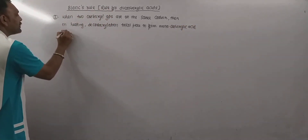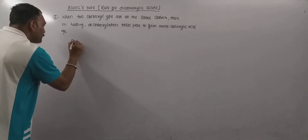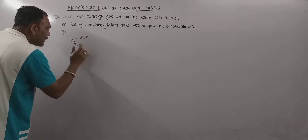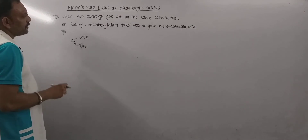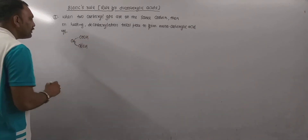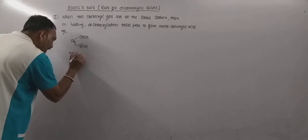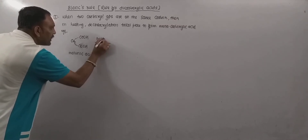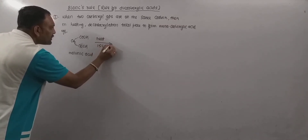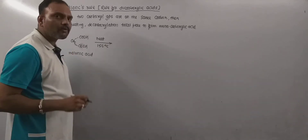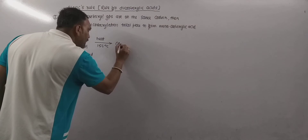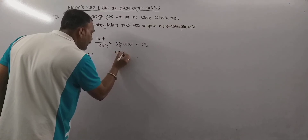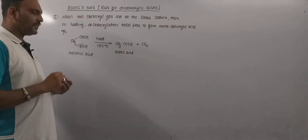To justify this, consider the example of malonic acid. Malonic acid is a dicarboxylic acid in which both of the carboxyl groups are connected to the same carbon. When malonic acid is heated strongly at about 150 degrees Celsius, it undergoes decarboxylation, leading to the formation of acetic acid, which is a monocarboxylic acid.